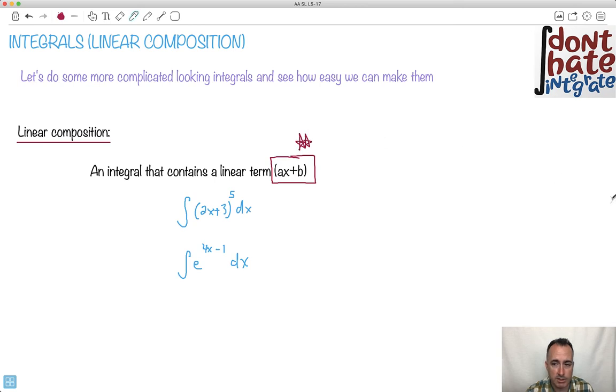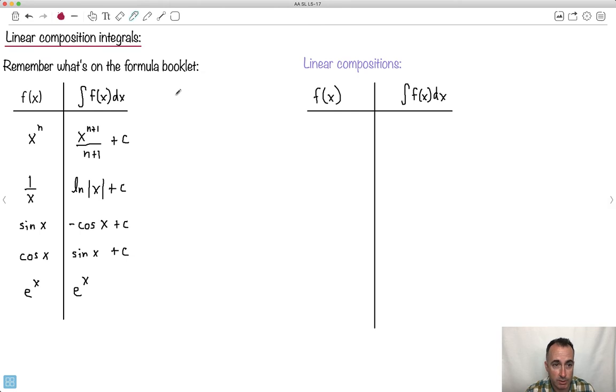So you don't get this on your formula booklet, but I'm going to show you it's actually quite easy. You just have to spot it. So remember what's on the formula booklet? X to the N, the integral is X to the N plus 1 over N plus 1 plus C. And then you got 1 over X, your sine, cos, and E to the X. That's on your formula booklet. This over here isn't, but I want to show you an easy trick.